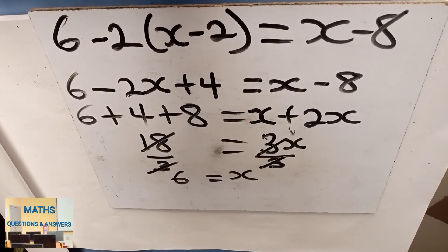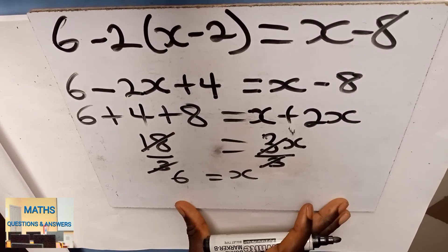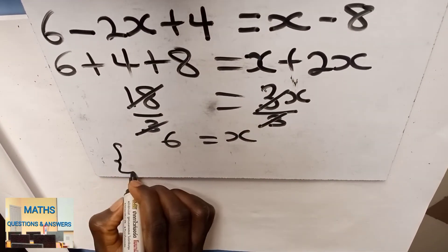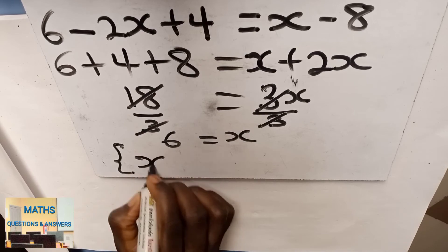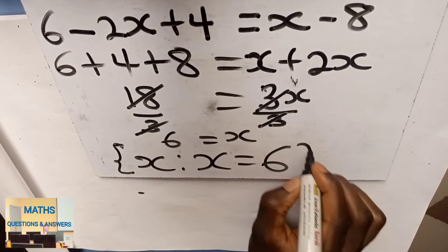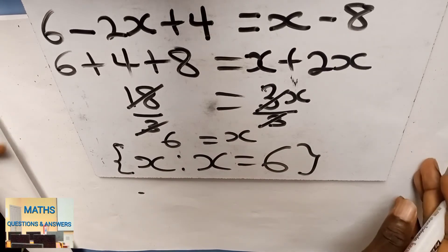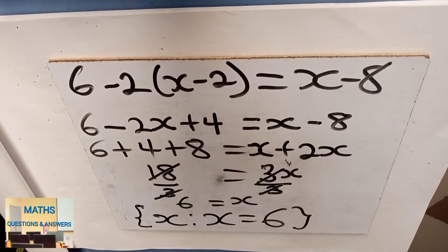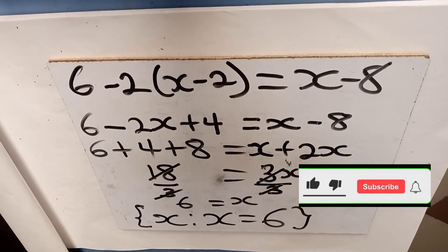But this is not the answer we want. We want the truth set. So let's write the truth set to finalize our solution. The truth set is x. It's said that x is equal to 6. So this becomes the answer for the question. That's the truth set.